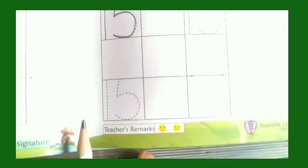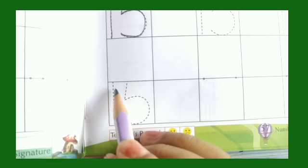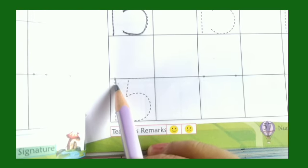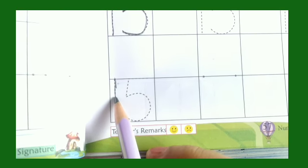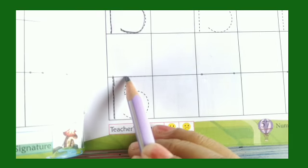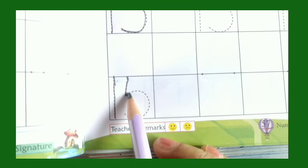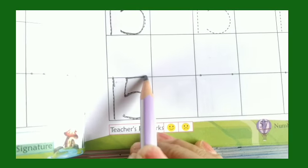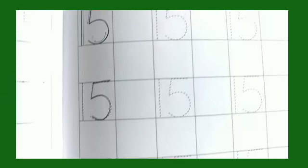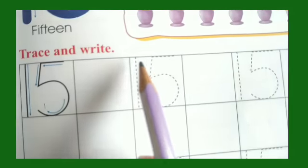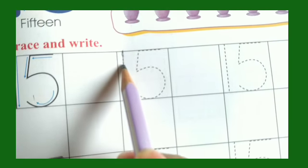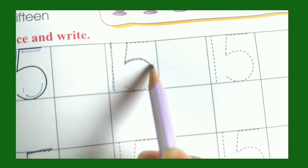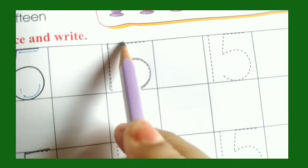Fifteen. One, and then you write what? Then you write which number? Yes, five. Fifteen. One, and then you write five. Fifteen.